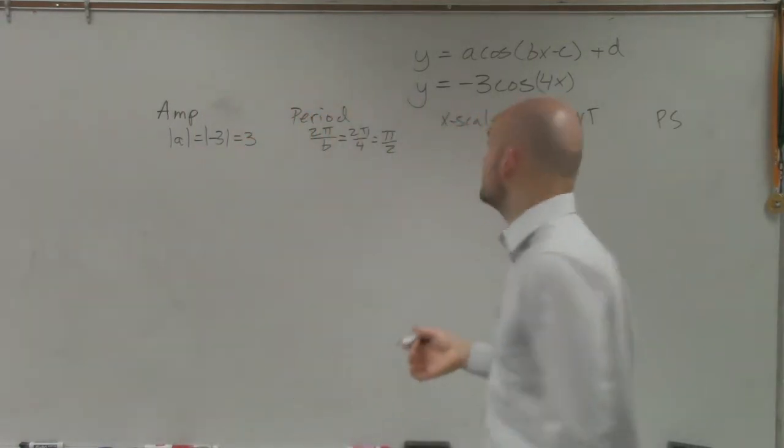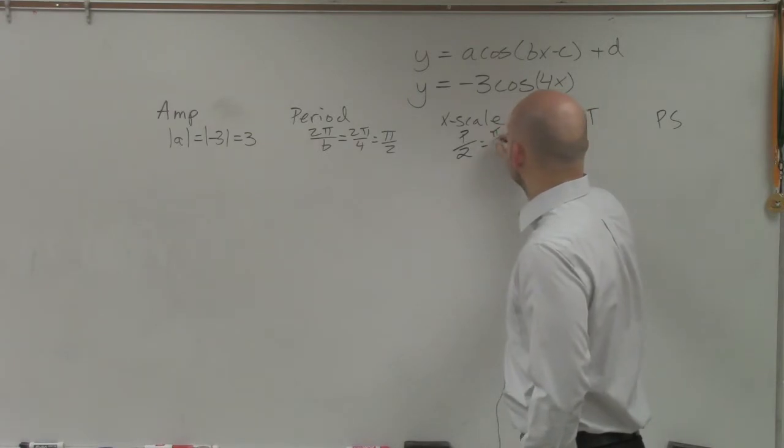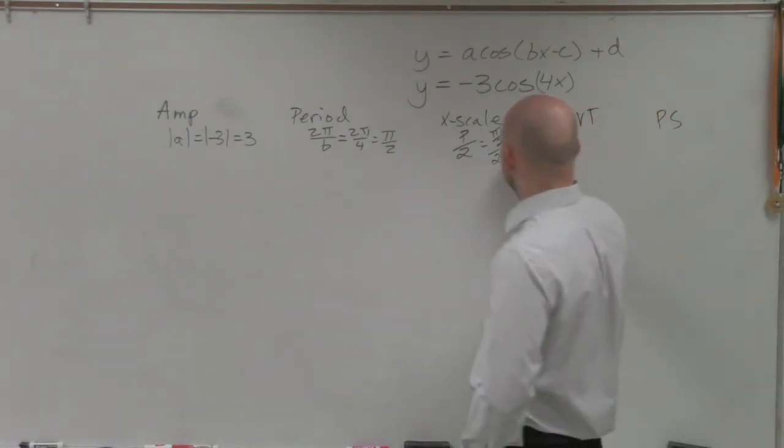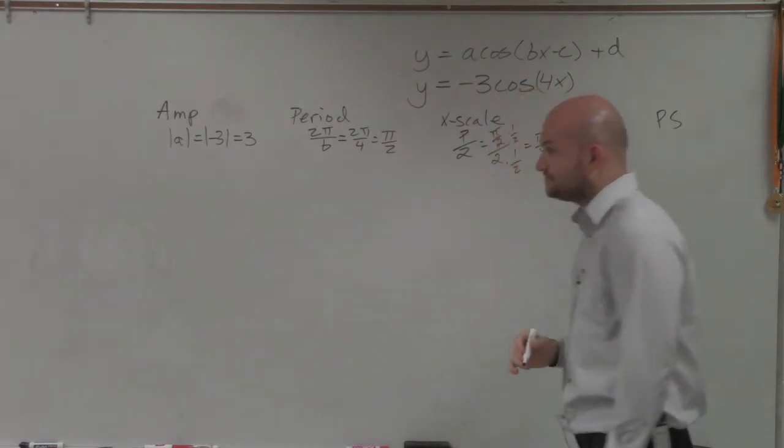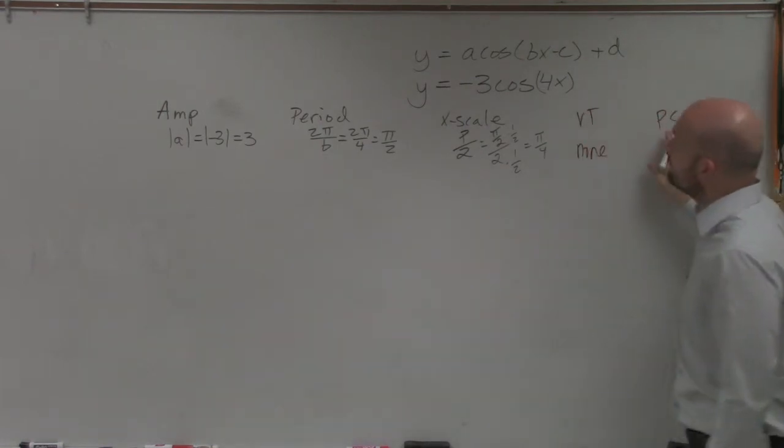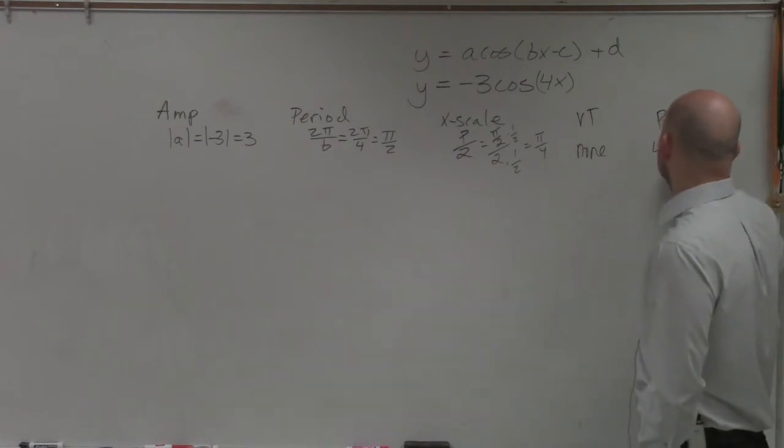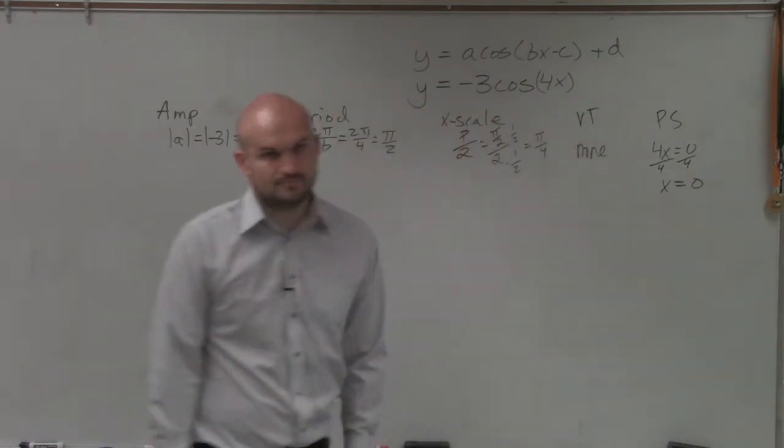To find the x scale, you simply take the period and divide it by 2. So that equals π halves divided by 2. This is like where we started getting into fractions and all that stuff. Multiply by the reciprocal, you get π over 4. Vertical translation, that means that's going to be your d, is your graph going up or down, which in this case is none. And then our phase shift, we take what is set inside of our parentheses and set it equal to 0. Well, inside of our parentheses, we just have 4x. So our phase shift is going to start at 0.